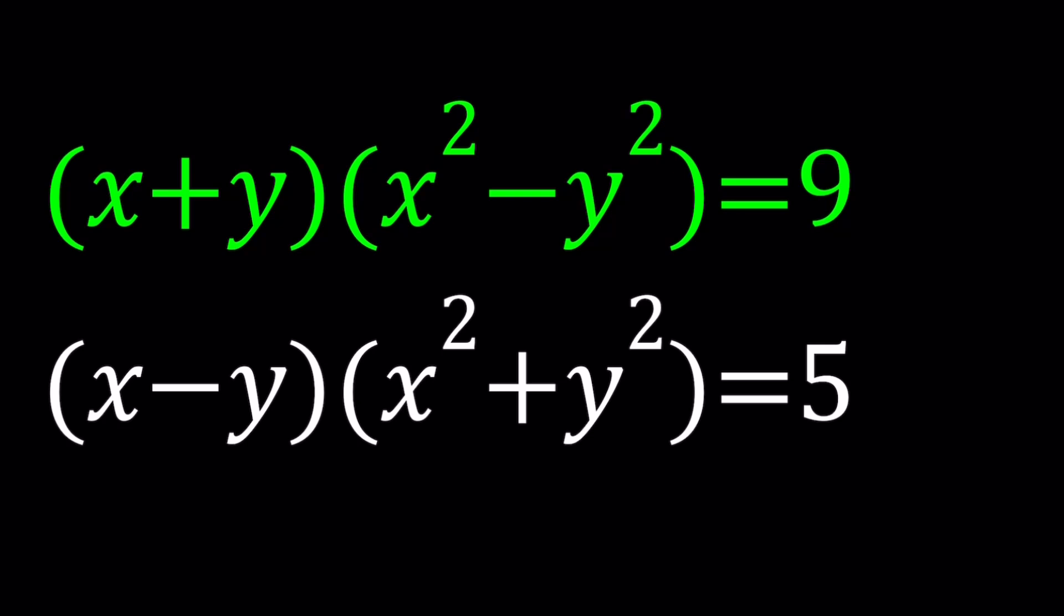I can start by factoring x squared minus y squared, because remember we talked about this, this is called difference of two squares, and very important. So, let's go ahead and do it, x plus y times x plus y again, times x minus y. That's how you factor x squared minus y squared. Great.